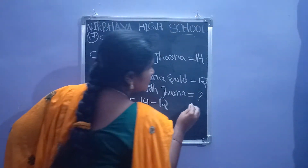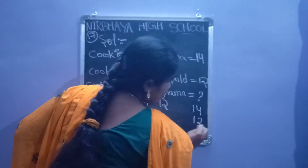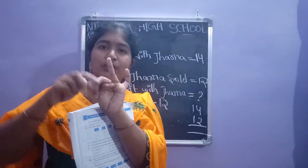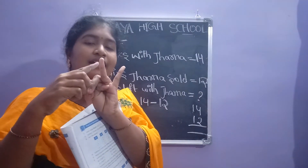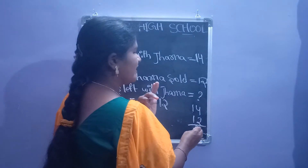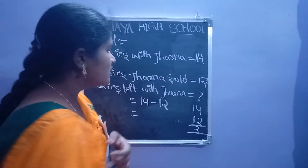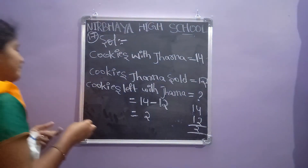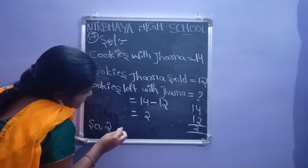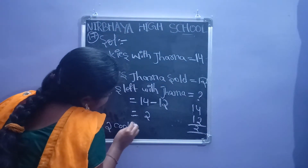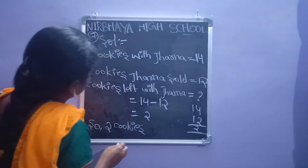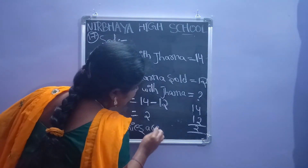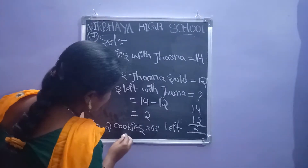So 14 minus 12. Do the subtraction: 4 minus 2 means take 4 fingers and remove 2 fingers — 1, 2. How many are remaining? 1, 2 — 2 fingers remaining. Here 1 minus 1 means no value — 0. So 14 minus 12 equals 2. Cookies left with Jana: 2 cookies are left with Jana.